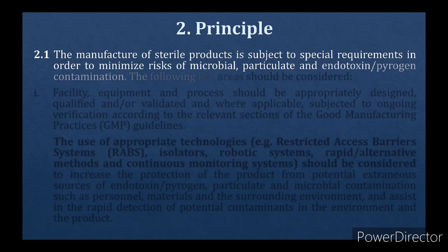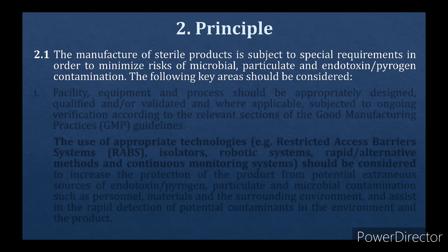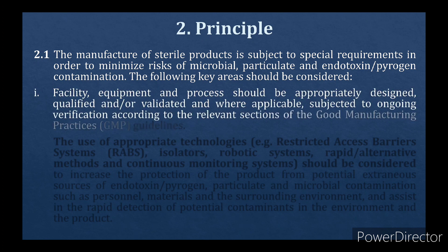The manufacture of sterile products is subject to special requirements in order to minimize risk of microbial, particulate, and endotoxin/pyrogen contamination. The following key areas should be considered. Facility, equipment and process should be appropriately designed, qualified and/or validated, and where applicable subjected to ongoing verification according to the relevant sections of the Good Manufacturing Practices (GMP) guidelines.